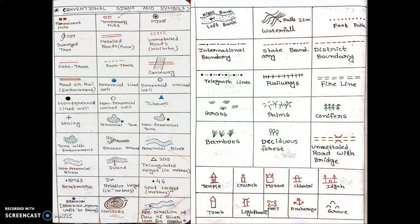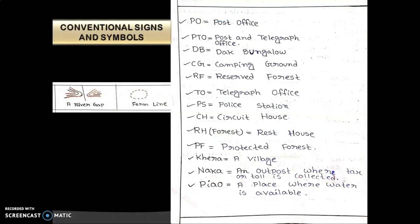Conventional signs help in giving maximum information about a place or area. Here I have drawn almost all the symbols for easy understanding. There are two squares filled with red color denoting permanent huts, and a square shape only outlined in red denoting temporary huts. Other symbols include mine, survey tree, metal road, unmetalled road, car track, pack track, river gap, and farm line.